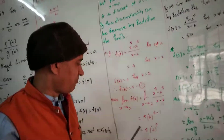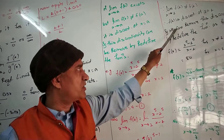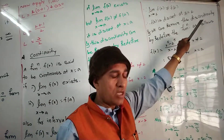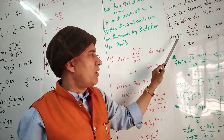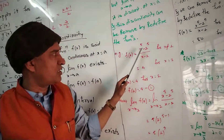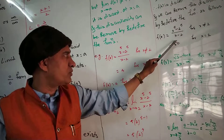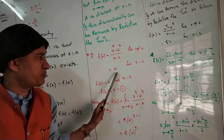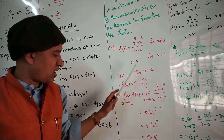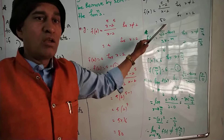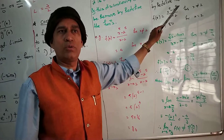But the limit exists, so this discontinuity can be removed by redefining the function. We redefine f(x) as: x⁵ - 2⁵ upon x - 2 for x ≠ 2, and f(2) = 80 (the value of the limit). Now this function is continuous at x = 2.